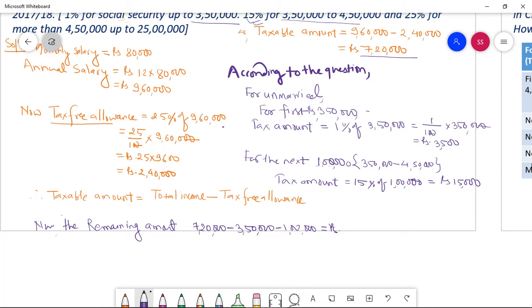Tax amount for the rest two lakhs seventy thousand equal, how much percent? It is twenty five percent. So twenty five percent of 2,70,000 equal twenty five by a hundred times two lakhs seventy thousand equal to Rs